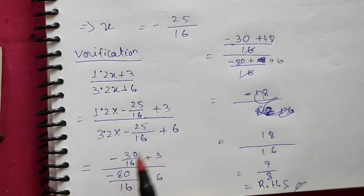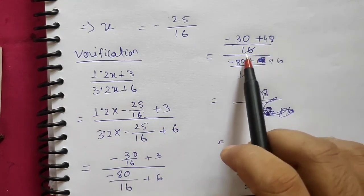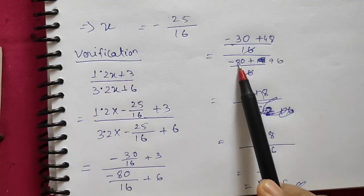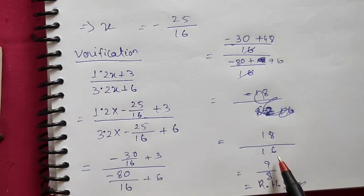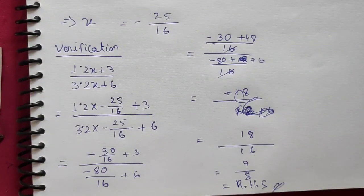Verification for question 8 with x = 25/16: Taking LCM 48 for the numerator and denominator, simplifying gives -30 + 48 = 18 in numerator and -80 + 96 = 16 in denominator. Dividing both by 2 gives 9/8, which equals RHS. So x = 25/16 is verified. The rest of the problems will be solved in the next video.